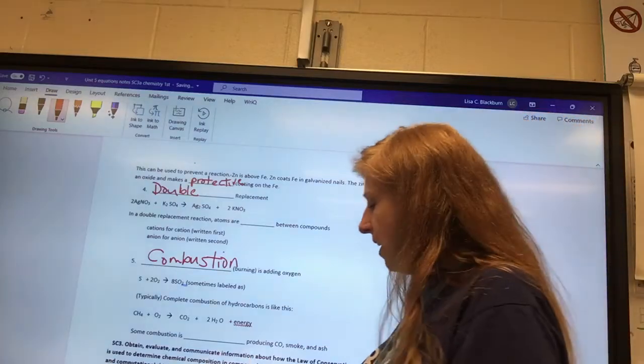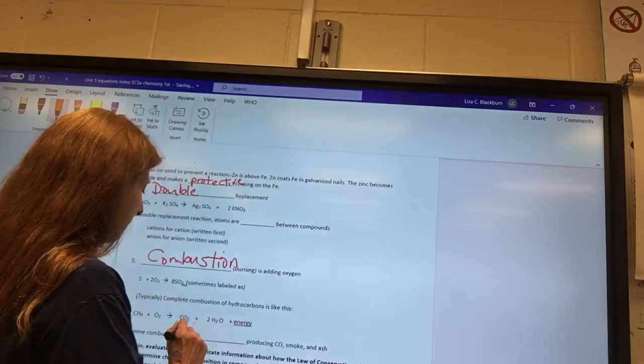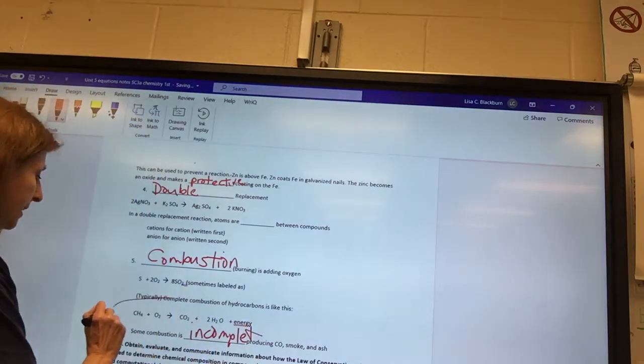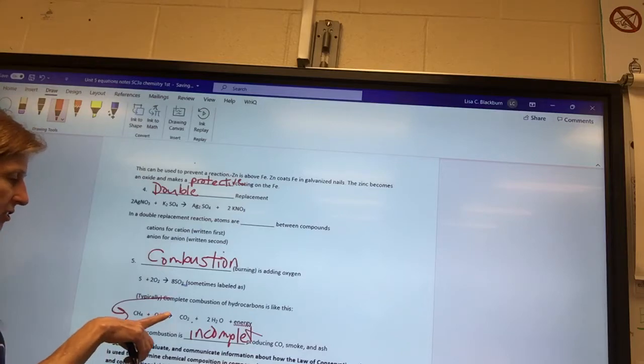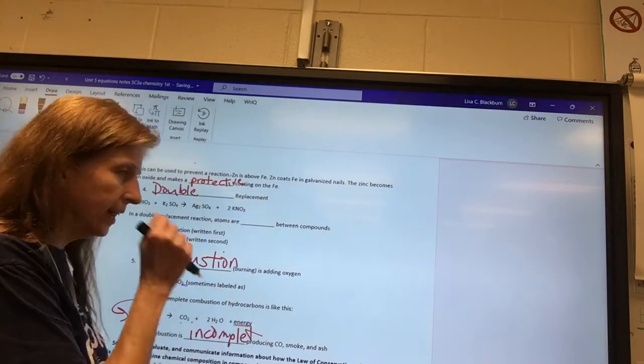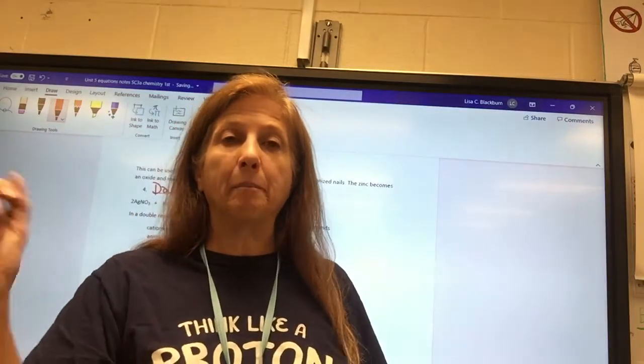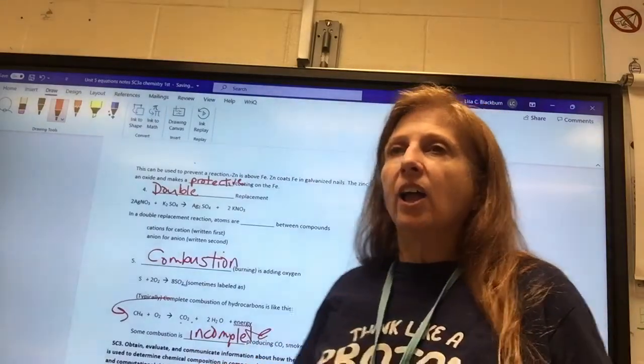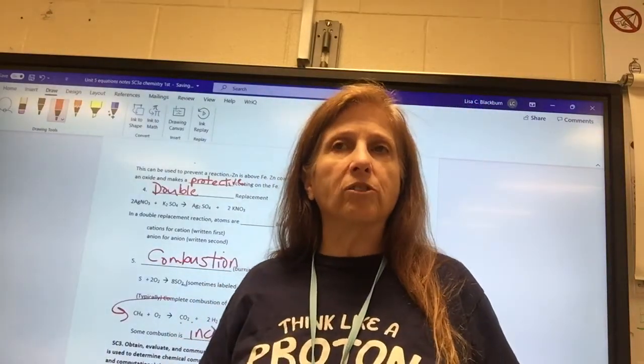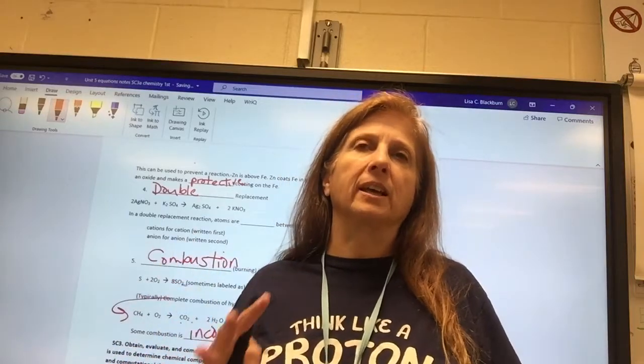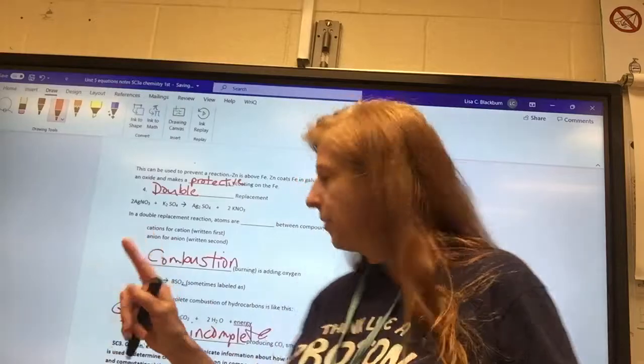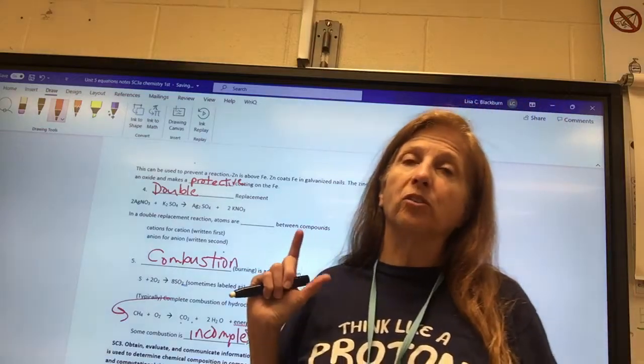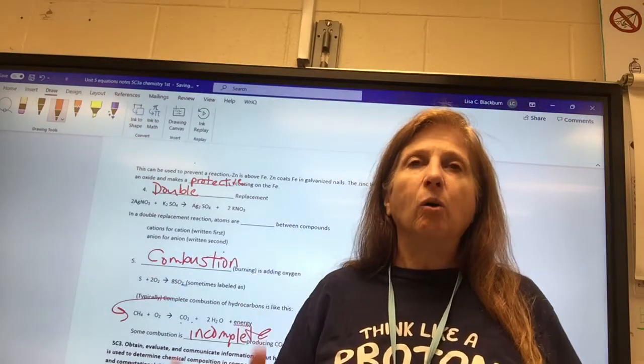And then our last thing, sometimes combustion is incomplete. This is complete combustion. You add oxygen, you get carbon dioxide, water, and energy. And that is what happens when I light my Bunsen burner. But if you build a candle, if you burn a candle, you get smoke, don't you? If you have a fire in your fireplace at home, you get ash and other things. So one of the big things with incomplete combustion is it can produce carbon monoxide, which will kill you.